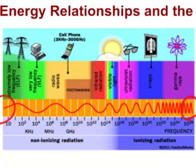Longer waves include things like radio transmissions and cell phones, and here are microwaves that you find in your microwave cooker. What's important for us of course is visible light — here's the section of the spectrum where you and I can actually see things.